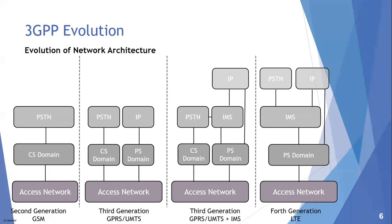In GPRS, which is the extension of 2G, and UMTS, which is the extension of 3G, I have CS and PS domains. The CS domain is connected to the public switched telephone network — the PSTN — and the packet-switched domain is connected to external networks such as the internet.